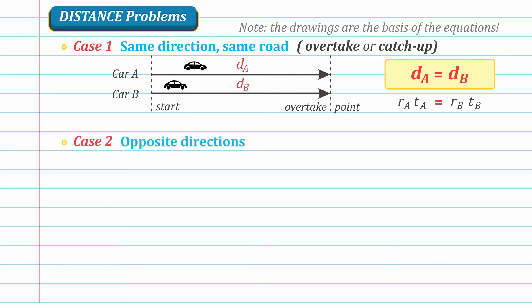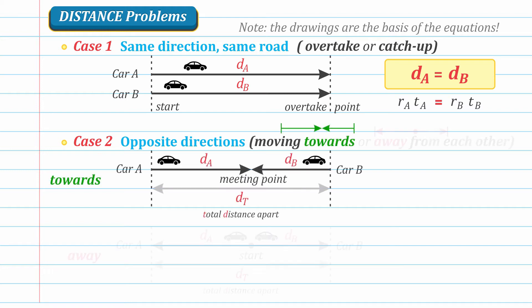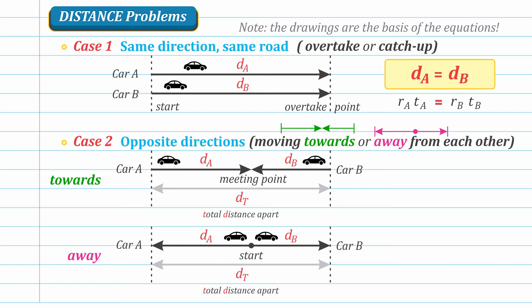Case two tackles objects going in opposite directions. These objects can either be going towards each other or away from each other. From these figures, we know that either way, the distance traveled by A added to the distance traveled by B should be equal to a third distance given, which we can call the total distance apart.